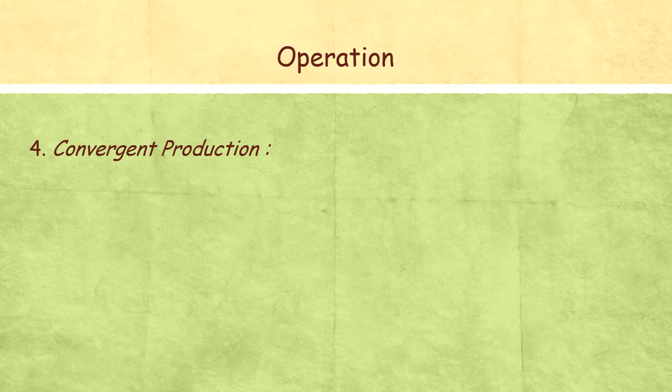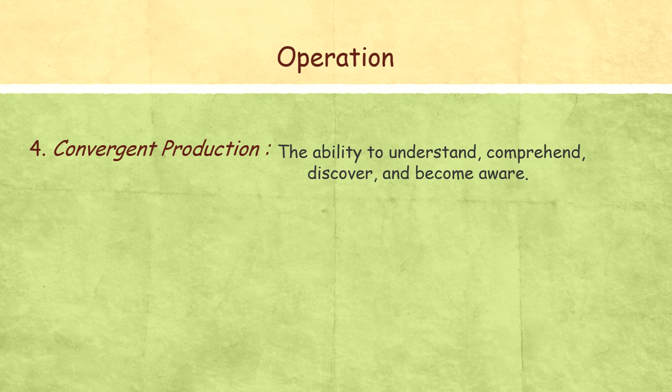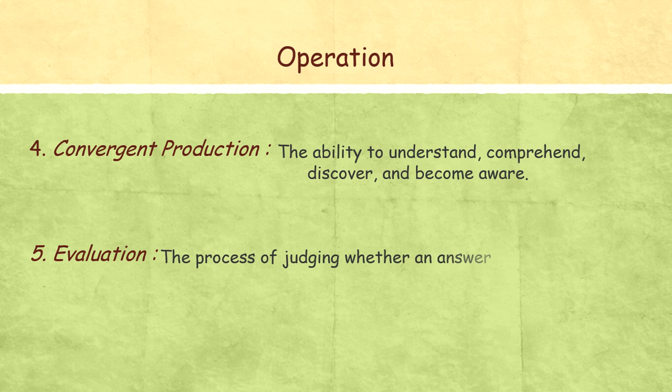The fourth one is Convergent Production or Convergent Thinking. Earlier we have lots of solutions, now we are coming to one solution that fits our problem. And the last one is Evaluation. We evaluate all the options, whether this is the right answer or wrong, and we come to the conclusion.